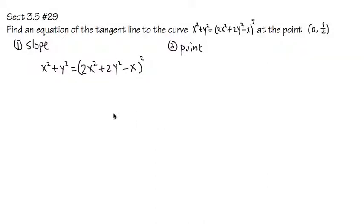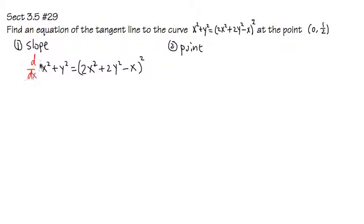3.5, number 29. We are going to find an equation of the tangent line to this curve at this point. To find an equation of a tangent line, we need two things: the first is the slope, the second one is the point. Let's work out the slope first. The slope of the tangent line is the derivative, so we have to look at this equation and take the derivative. We have to do this by implicit differentiation, because the y is not isolated.